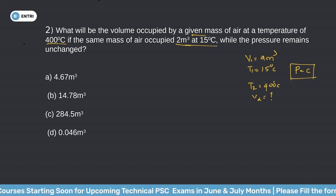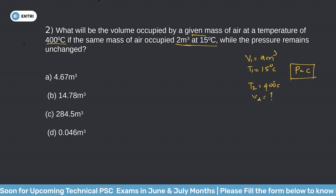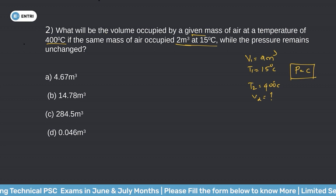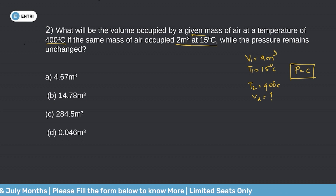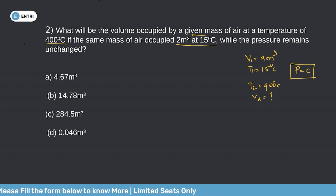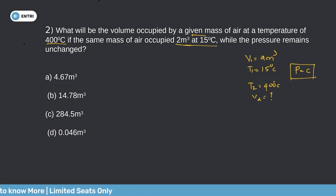To find the final volume, we apply the perfect gas laws. The relevant perfect gas laws in thermodynamics are Boyle's law, Charles's law, Avogadro's law, and Gay-Lussac's law.